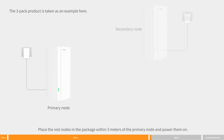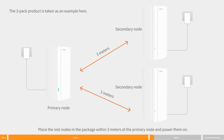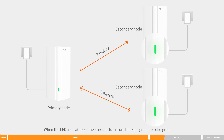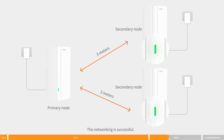Step three: extend the network. The three-pack products are taken as an example here. Place the rest of the nodes in the package within three meters of the primary node and power them on. Wait about three minutes. When the LED indicators of these nodes turn from blinking green to solid green, the networking is successful.